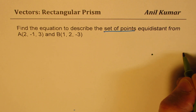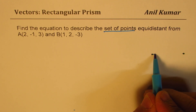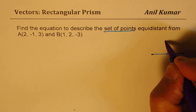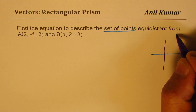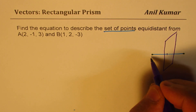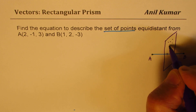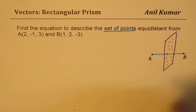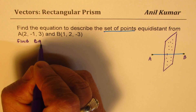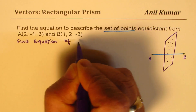So let us say this is point A and this is point B. Definitely a point right in the center will be equidistant. But what is the set of points which will be equidistant? That is actually the whole plane. So the whole plane, like this, in between these two points A and B — all the points on this plane will actually be equidistant from A and B.